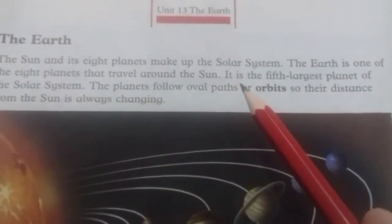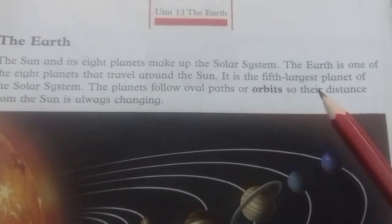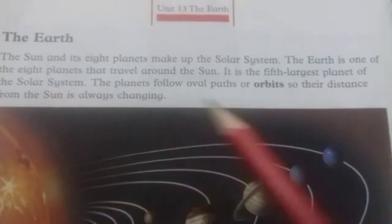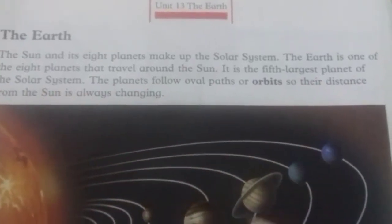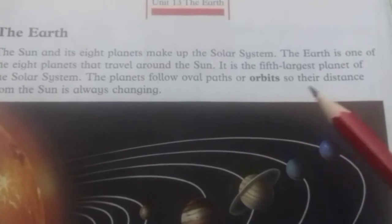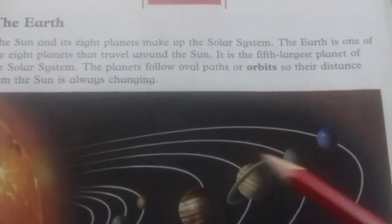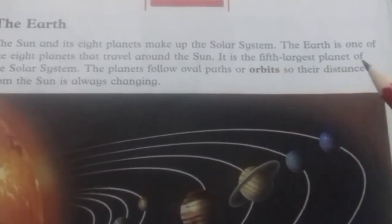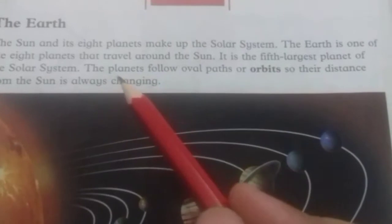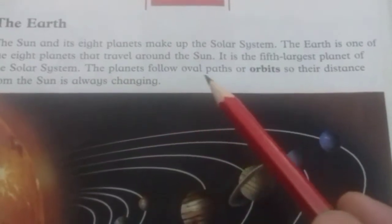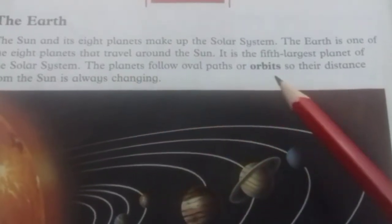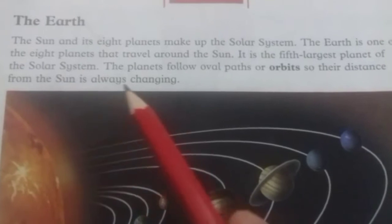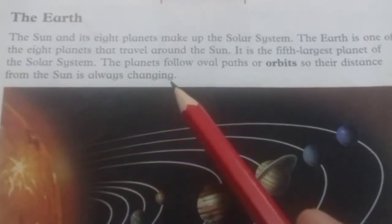It is the fifth largest planet of the solar system. Its number kaun sa hai zameen ka solar system mein — wo panchwa number hai. The planets follow an oval path or orbit, so their distance from the Sun is always changing.